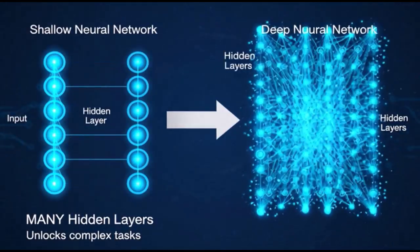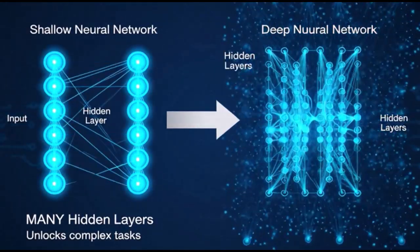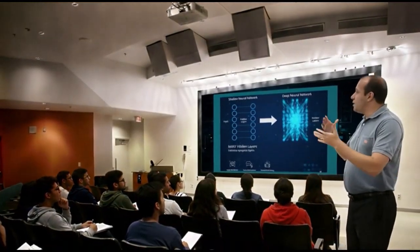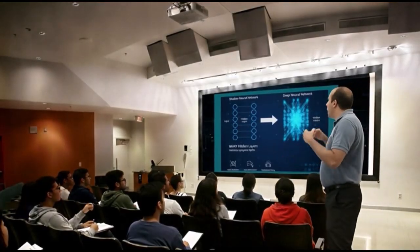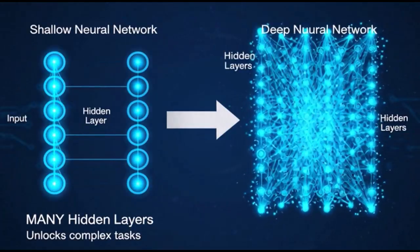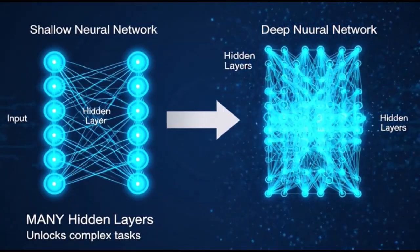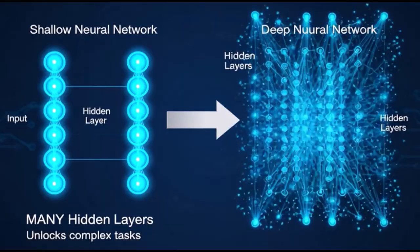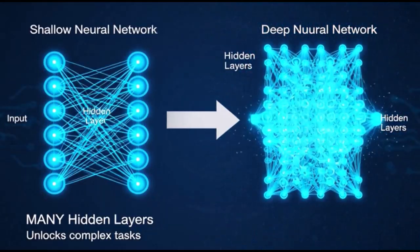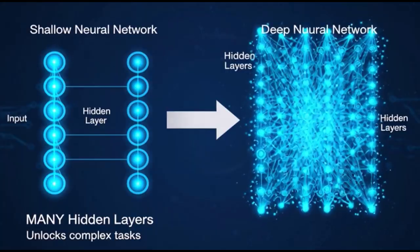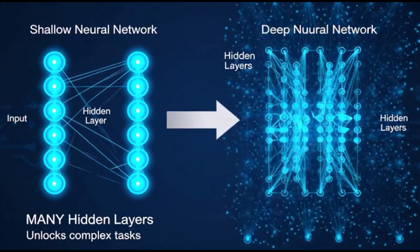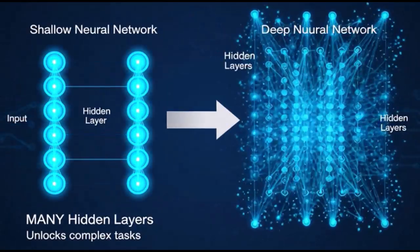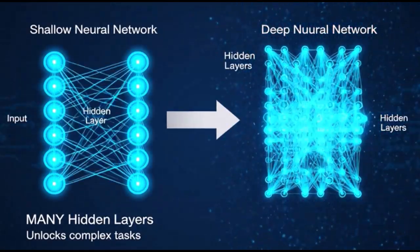This incredible depth is where the 'deep' in deep learning comes from. Why is this depth so important? Each additional hidden layer allows the network to learn progressively more abstract and intricate patterns from the data. This hierarchical learning enables deep learning models to handle highly complex tasks that were once considered impossible for computers. They can automatically extract features from raw data, eliminating the need for human-engineered features that are often required in traditional machine learning.